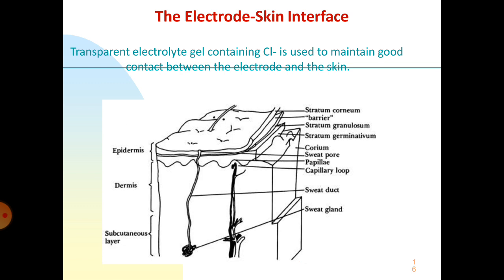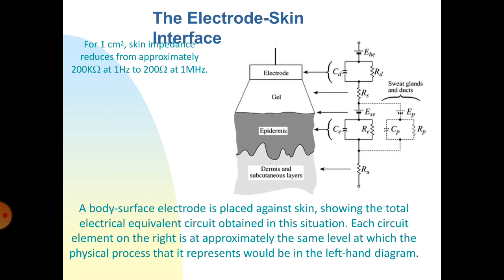This is very safe in our body. For 1 cm² skin, impedance reduces from approximately 200 kΩ at 1 Hz to 200 Ω at 1 MHz. Here a body surface electrode is placed against the skin, showing the total electrical equivalent circuit obtained in this situation. Each circuit element on the right approximately corresponds to the physical process represented in the left-hand diagram.